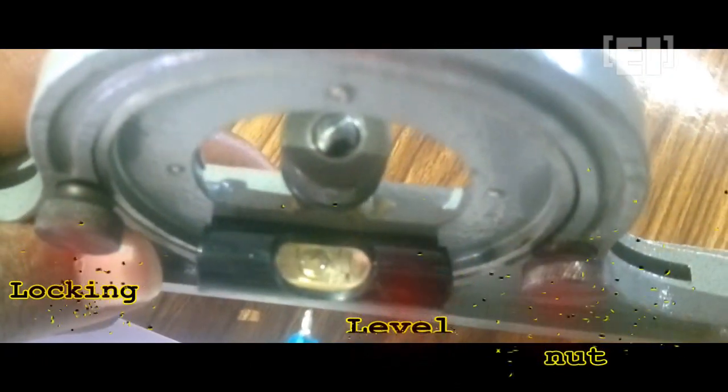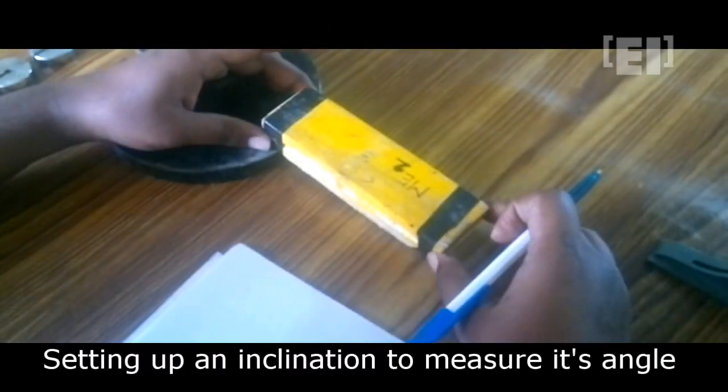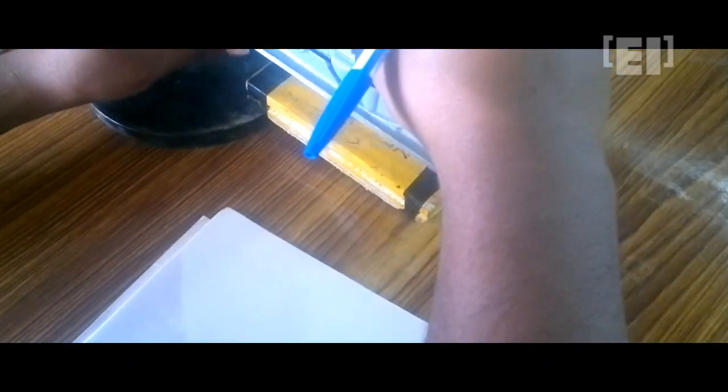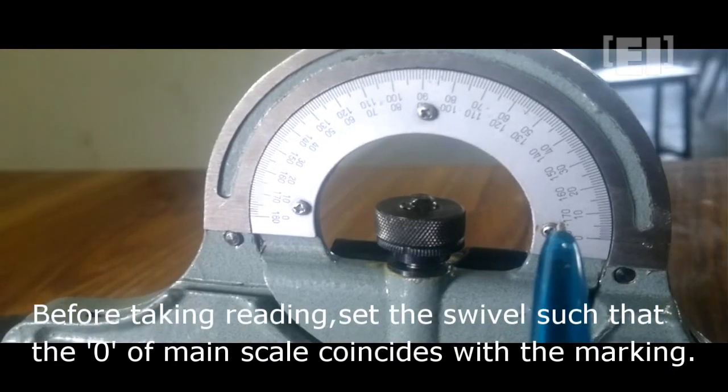the level for the bubble inside. The swivel plate helps in adjusting the angle. We are setting up an inclination. Put the protractor on its surface. Before taking any reading, set the swivel such that the zero of the main scale coincides with the marking on the body.